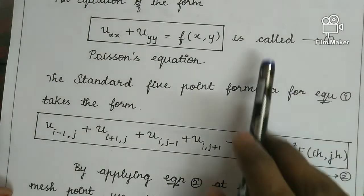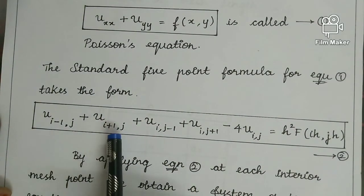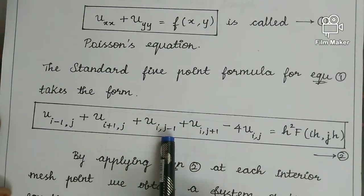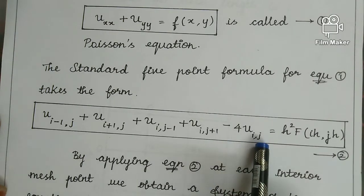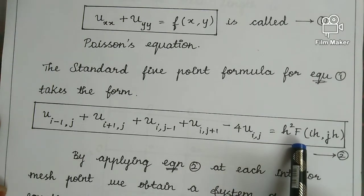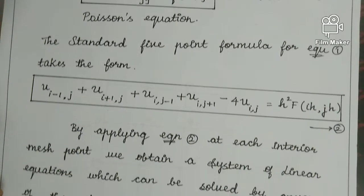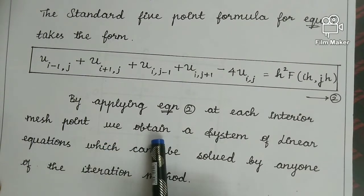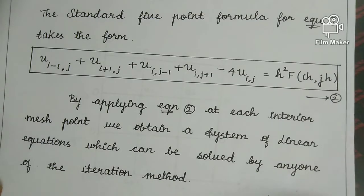The standard five-point formula for Poisson's equation takes the form: u(i-1,j) plus u(i+1,j) plus u(i,j-1) plus u(i,j+1) minus 4u(i,j) equal to h squared times F(ih, jh). By applying this equation at each interior mesh point, we obtain a system of linear equations which can be solved by any one of the iteration methods.